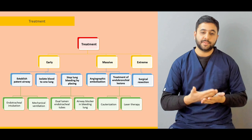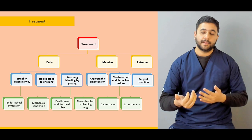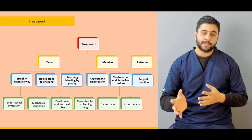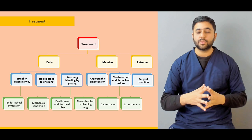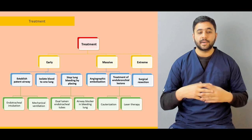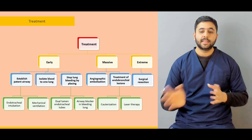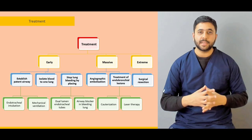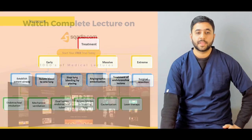For example, what are the early steps we can do, what are the later steps which we can do, and if we are not able to control the bleeding via the early establishment of the airway, then what are the extreme measures which we have to control the bleeding in these patients.